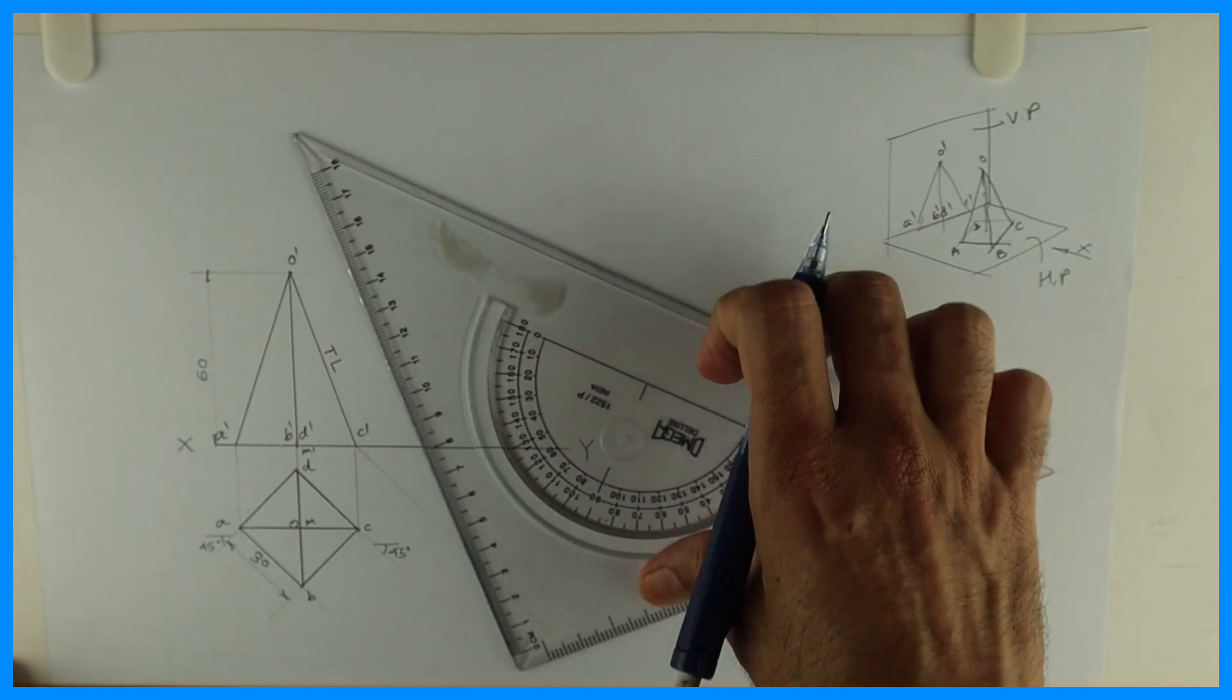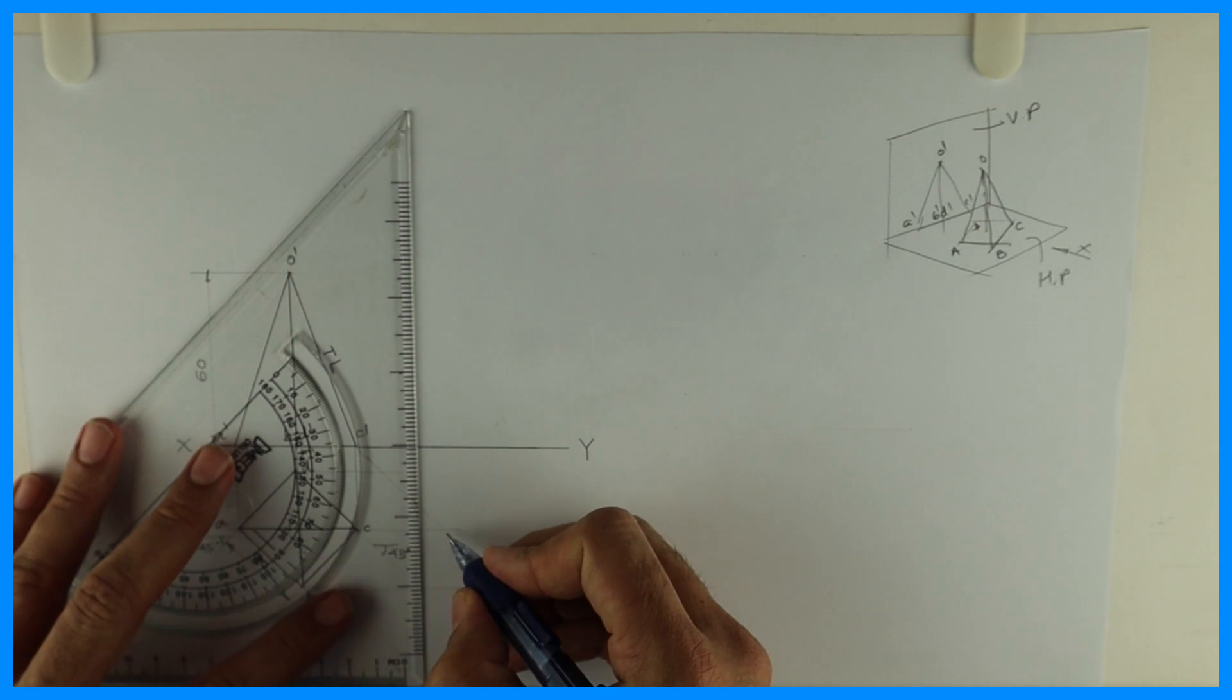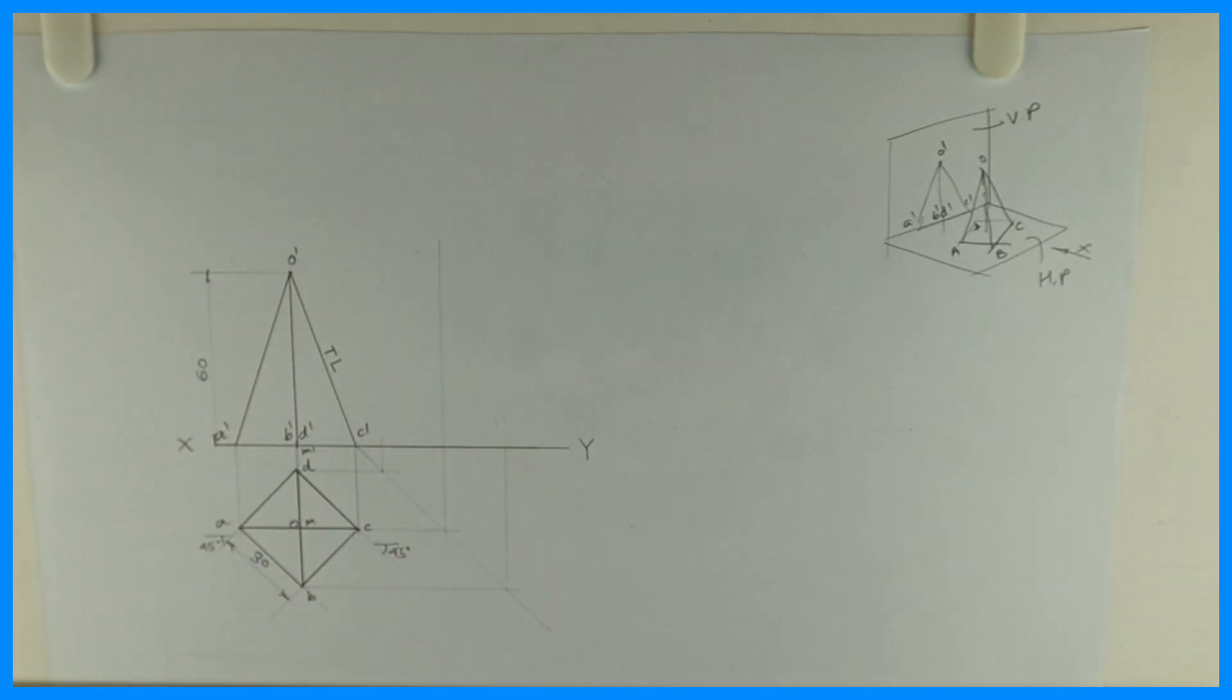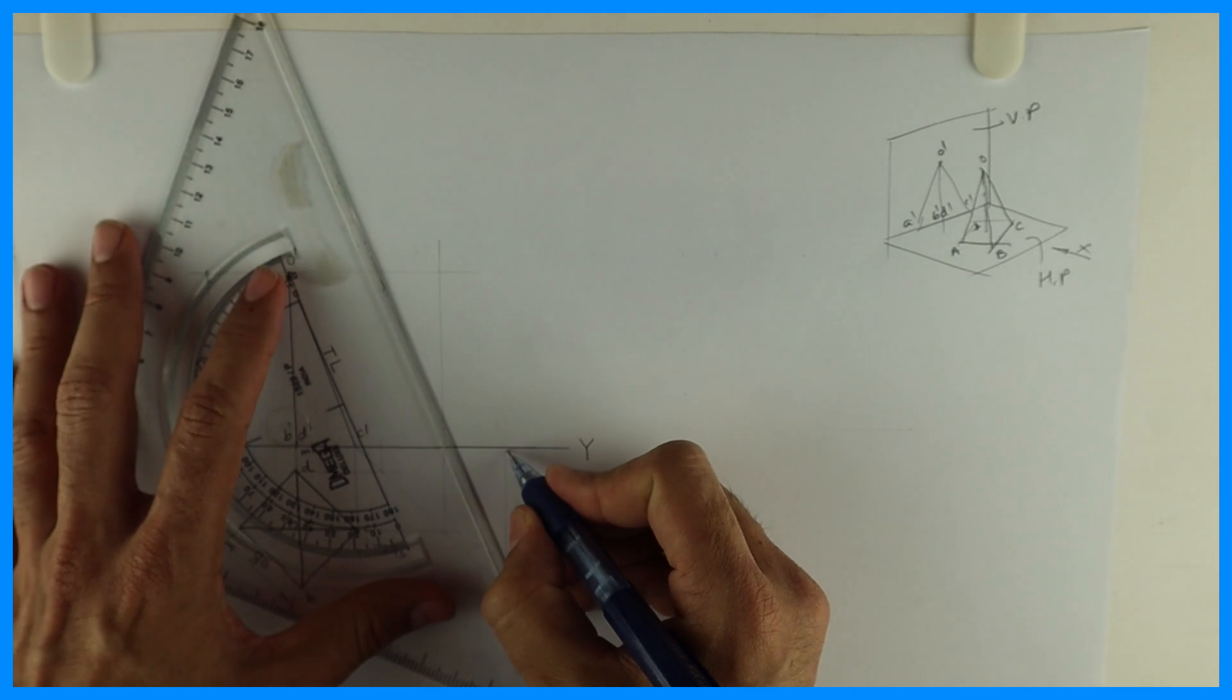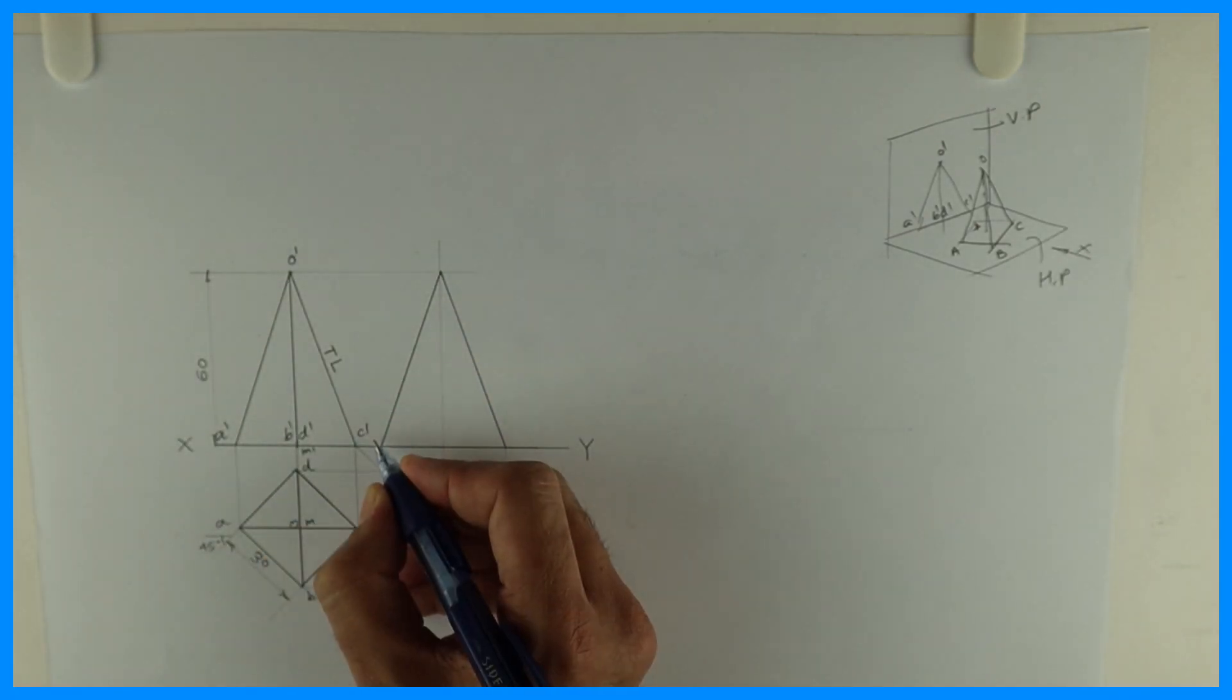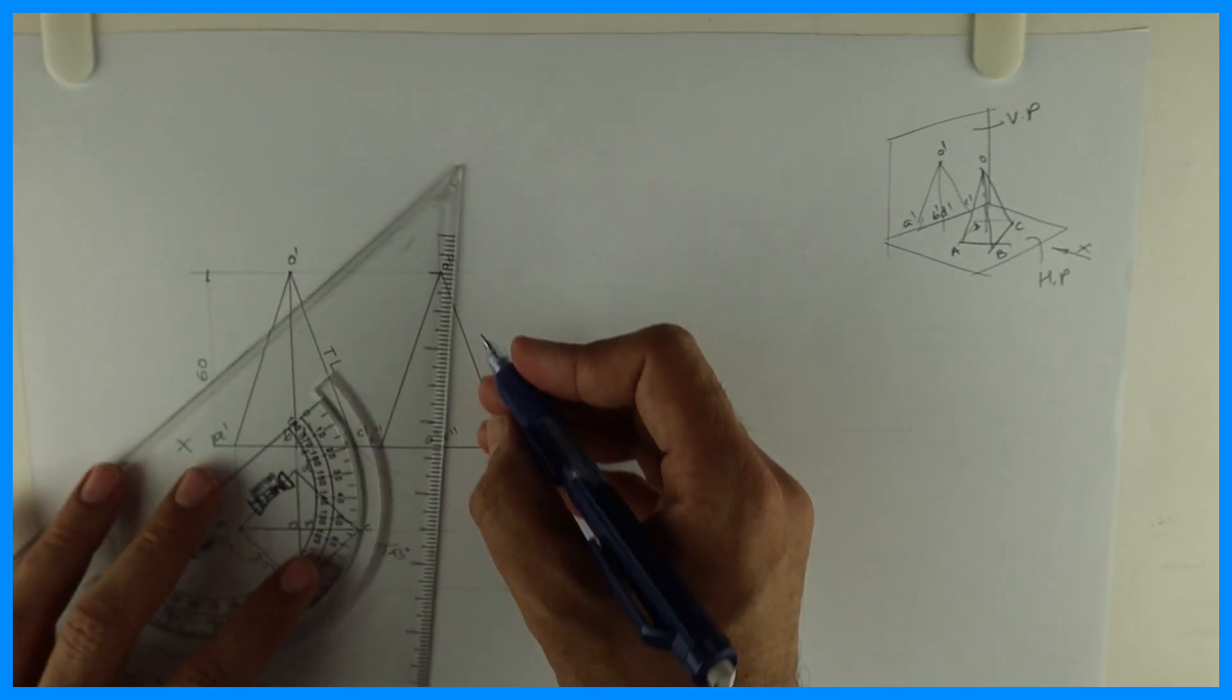First we will draw side view. This is 60. And we will draw side view here. So this is D double dash, A double dash, C double dash, B double dash, O double dash. And this will be LHSV.